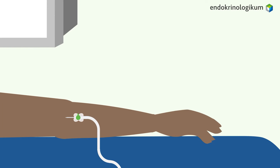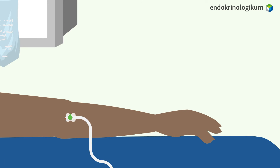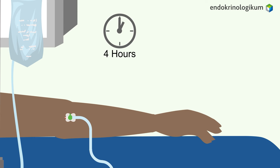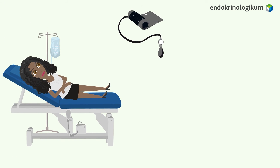A venous catheter will be placed in your arm, and blood will be drawn from it several times during the test. After the first blood sample, the saline solution will be administered slowly through an IV drip over a 4-hour period. You are allowed to use the restroom during this time, and your blood pressure will be monitored hourly.